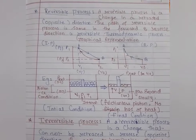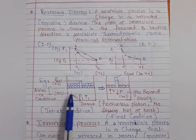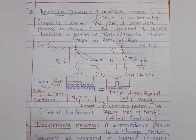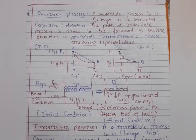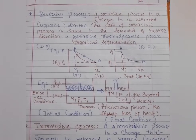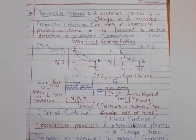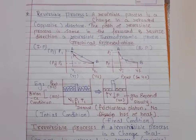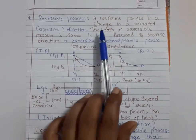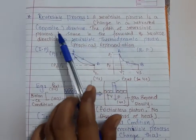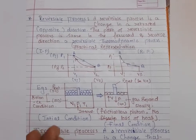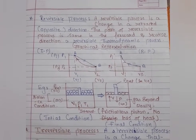Here we can see the graphical representation of Reversible Process and an example of it. A Reversible Process is a change in a retard or opposite direction. The path of the Reversible Process is the same in the forward and reverse direction. It means the initial state of the system can be restored.